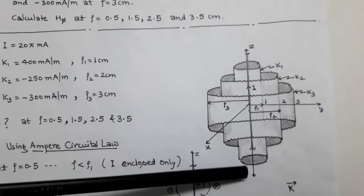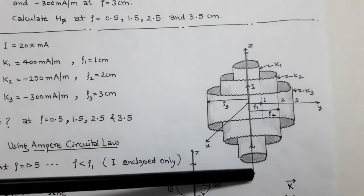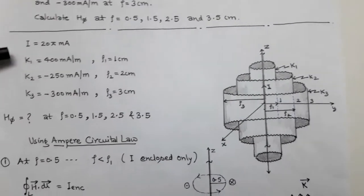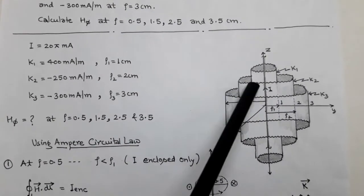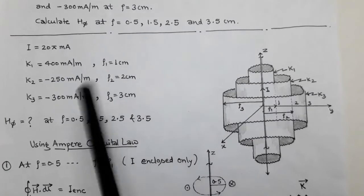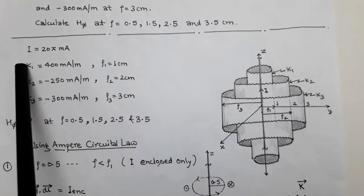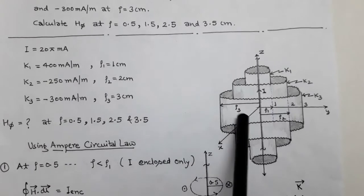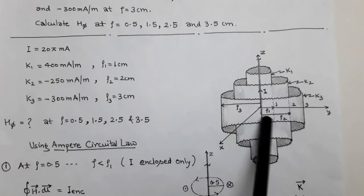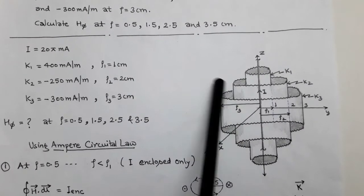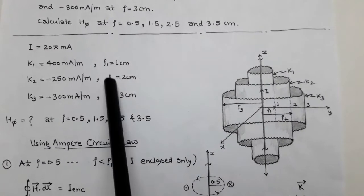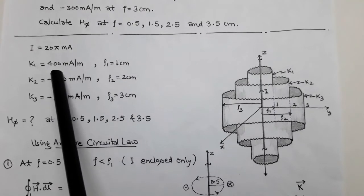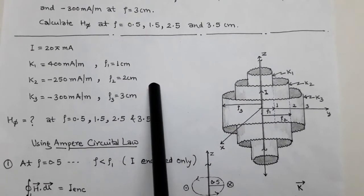From the question, there is an infinite filament situated on the z-axis carrying current I of 25 mA. Surrounding this filament, there are three uniform cylinders whose surface current densities are given. There is a cylindrical current sheet situated at ρ = 1 cm carrying a surface current density of 400 mA per meter.